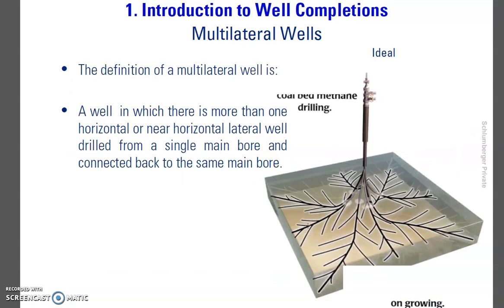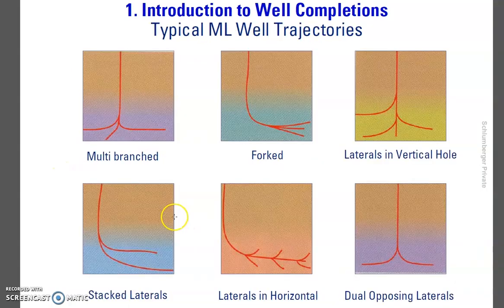Multilateral wells are defined as wells drilled from a single well. As you can see in this example, this is the vertical main well, and the multilateral wells are drilled from that same well. It has advantages, which we'll see on the next page. The types of multilateral wells include: multiply probed lateral, vertical holes, stacked laterals, lateral and horizontal, and finally dual opposite laterals.